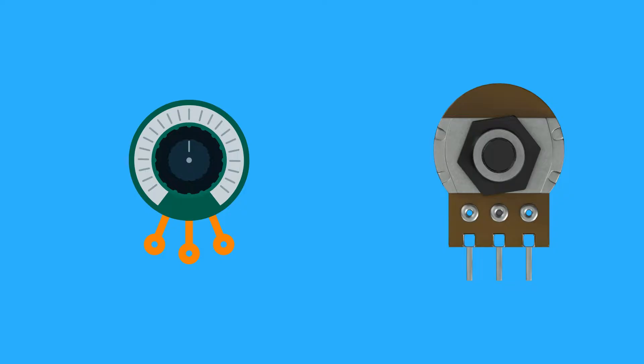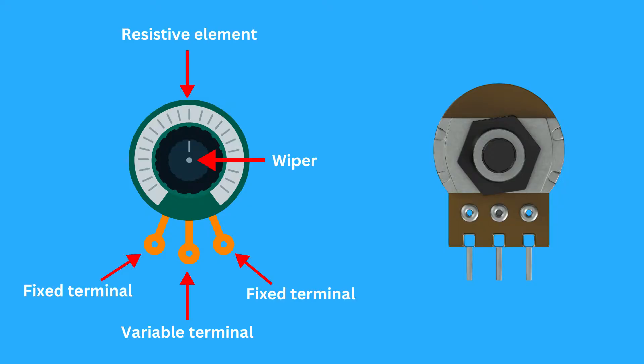A potentiometer, often referred to as a pot, is a type of variable resistor used in electrical circuits to adjust levels like voltage or current. It consists of three terminals. The two outer terminals are fixed and are connected to a resistive element. The middle terminal is variable and connected to a movable wiper that slides along the resistive element. By adjusting the wiper, you can change the resistance, thereby controlling the output of the circuit.